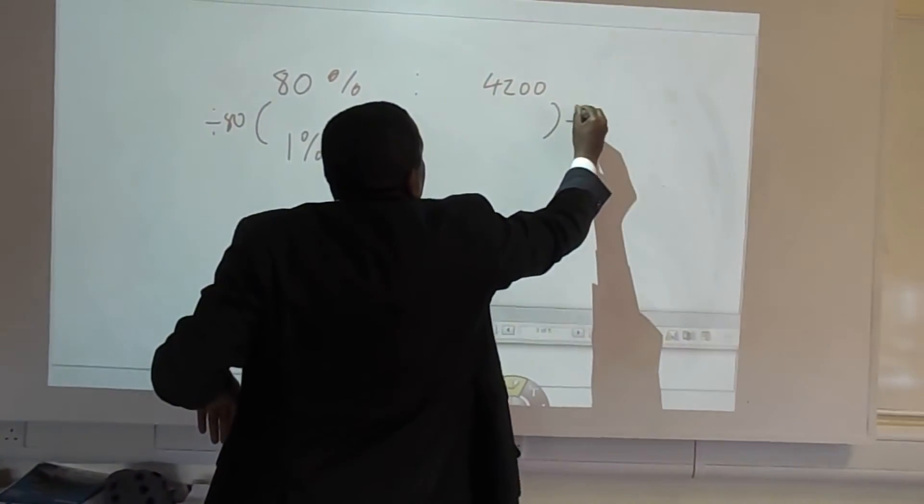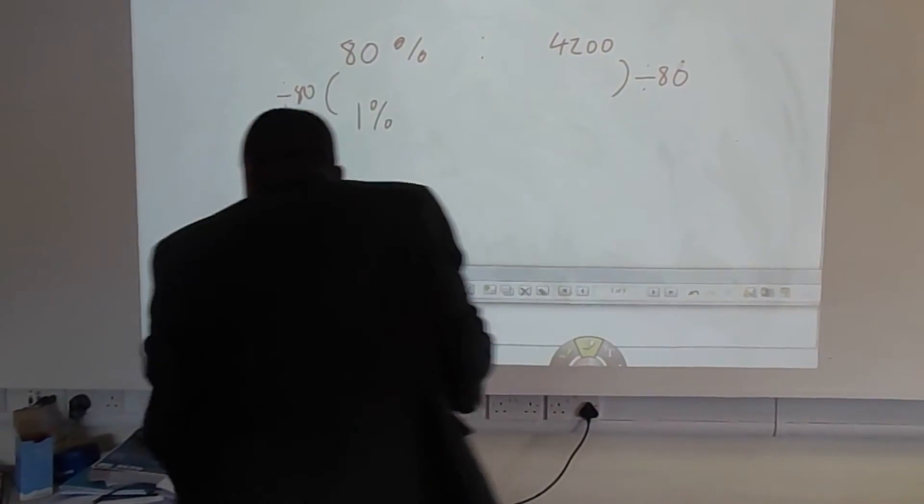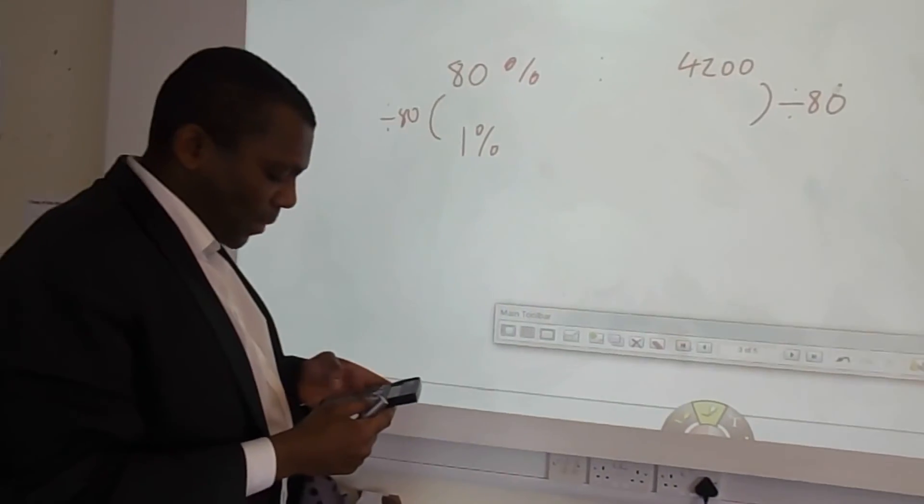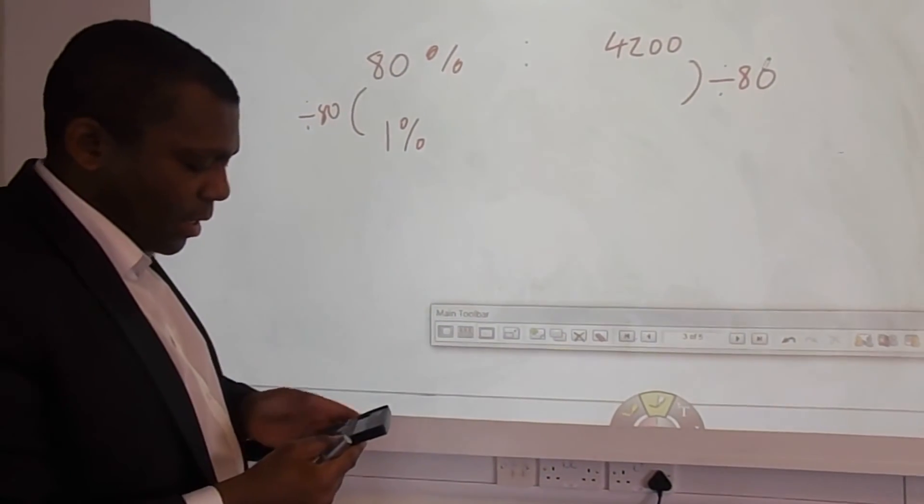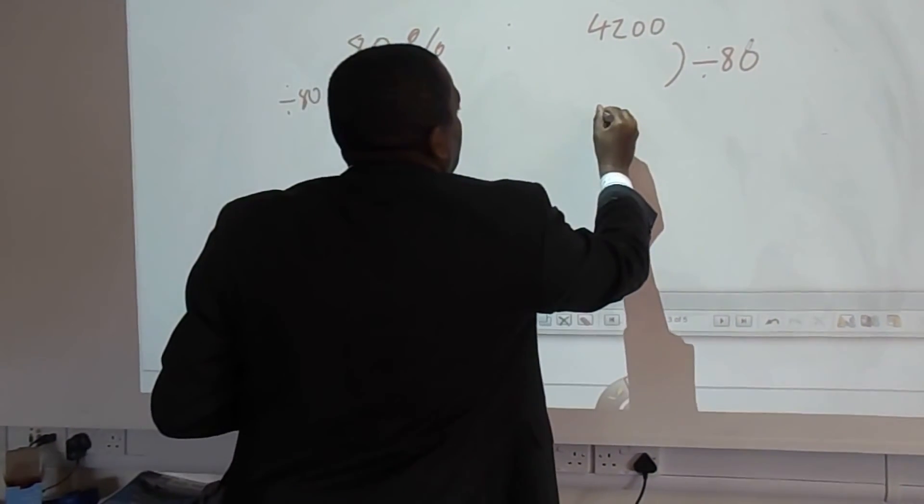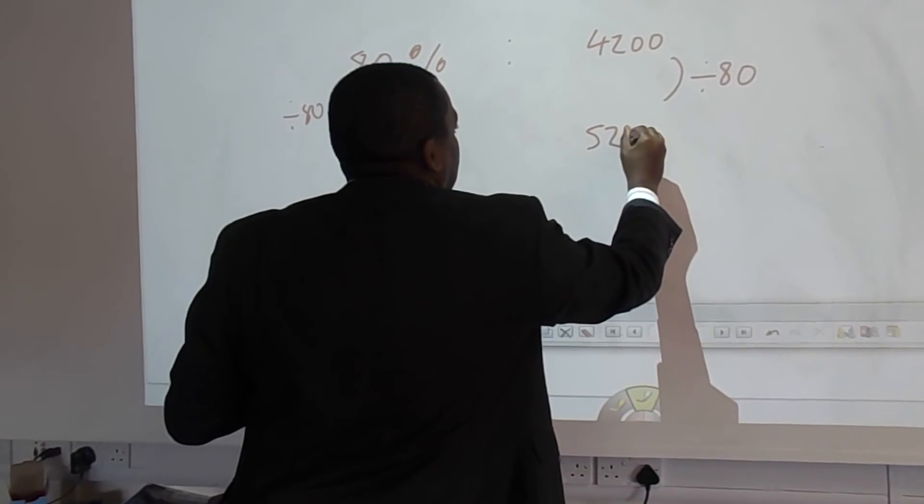So divide that, divide by 80. You get your calculator. And you get 52.50.